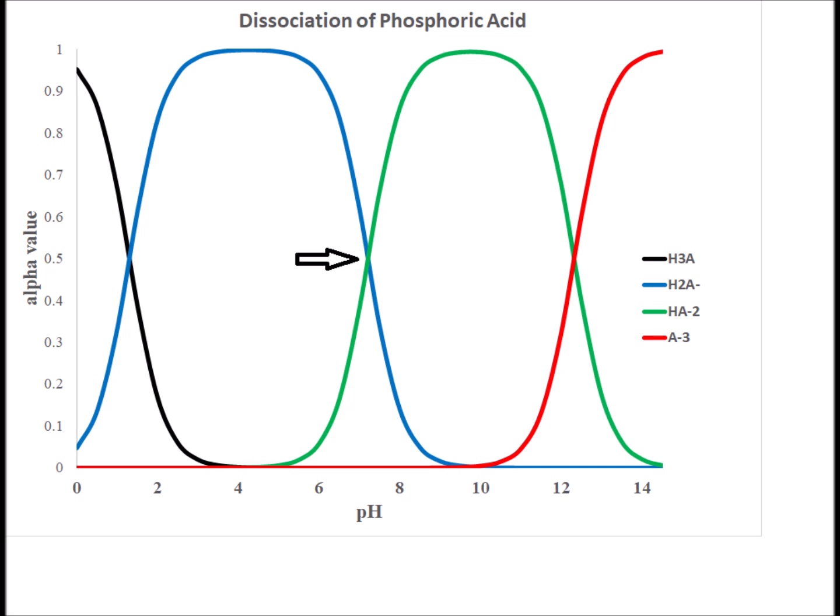Next we have the crossover between the blue line and the green line — the blue line being the dihydrogen phosphate minus one ion, and the green line being the hydrogen phosphate minus two ion. They have equal concentrations at 50-50, which corresponds to a pKa of 7.21. By the Henderson-Hasselbalch equation, at the pKa equal to the pH, the two species are in equivalent concentration.